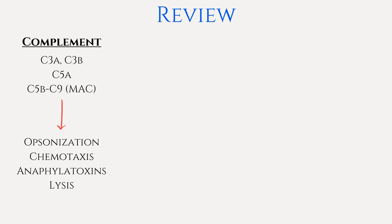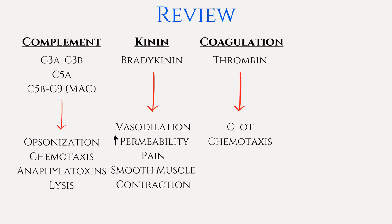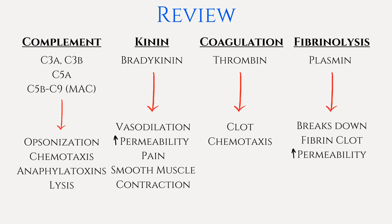In review of plasma-derived inflammatory mediators: the complement system with C3A, C3B, C5A, and C5B through C9 (the membrane attack complex), leading to opsonization, chemotaxis for phagocytes, anaphylatoxins, and lysis of pathogens. The kinin system, with bradykinin as the main mediator, contributing to vasodilation, increased vascular permeability, pain, and smooth muscle contraction. The coagulation system, resulting in clot formation and neutrophil chemotaxis through the action of thrombin. And the fibrinolysis system with plasmin, which breaks down fibrin clots and subsequently leads to increased vascular permeability.